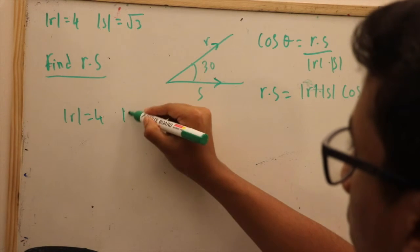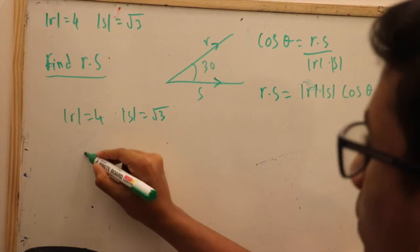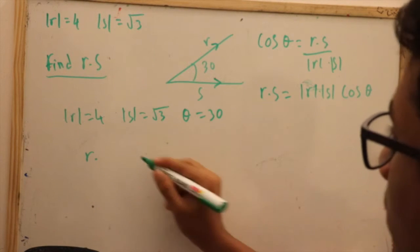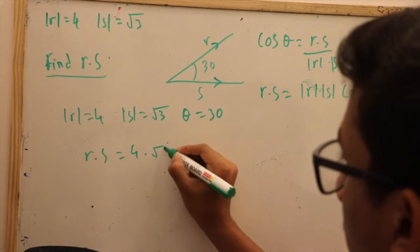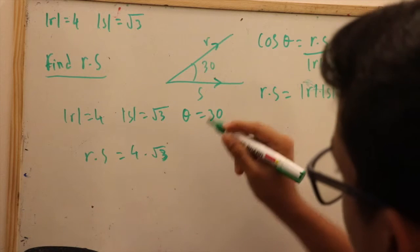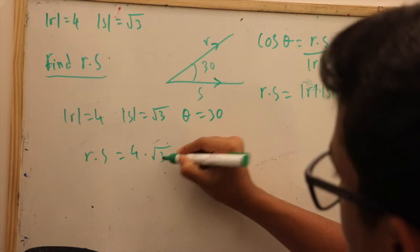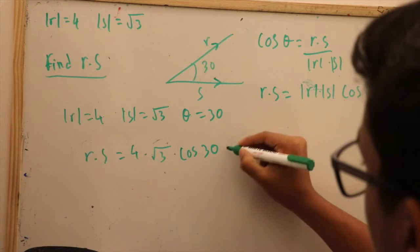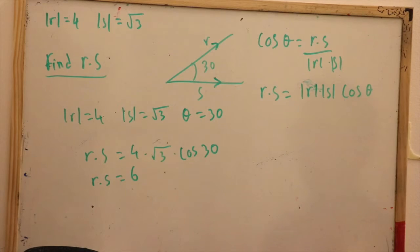Next, we plug in the values. The angle given equals 30 degrees. All we have to do is multiply the absolute value of R and the absolute value of S to isolate R·S: R·S equals 4 times square root of 3 times cosine 30, which equals 6.